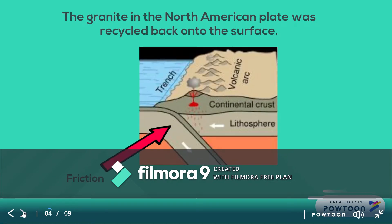During subduction, the friction from the two plates grinding together caused such high temperatures that the granite the North American Plate is made of was turned into magma and forced up to the surface through volcanoes. This allowed new igneous rock to form on the surface of modern-day California and neighboring states.